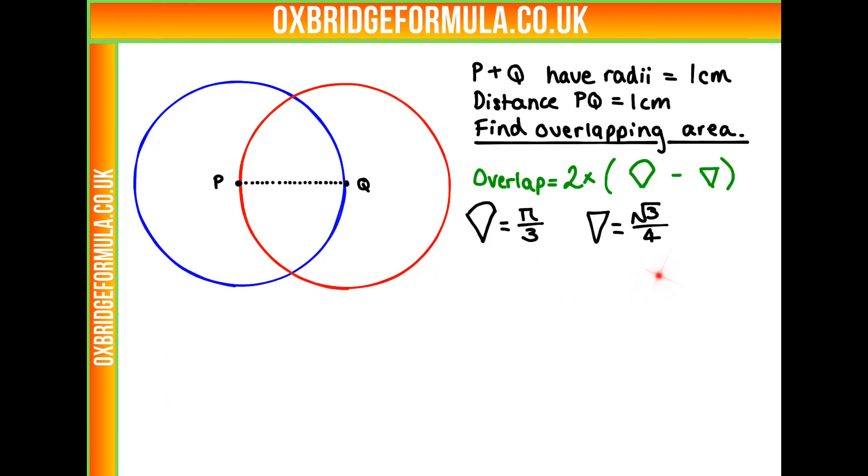So now we know our two areas, we can put them into our equation at the top. Our overlap is 2 times pi over 3, take away root 3 over 4, or 2 pi over 3, take away root 3 over 2. So our final answer is answer D.